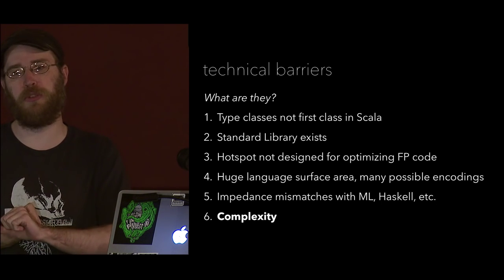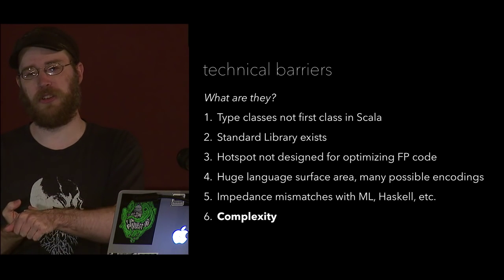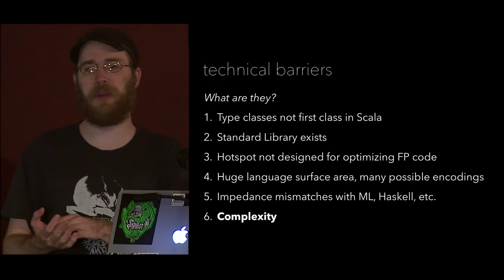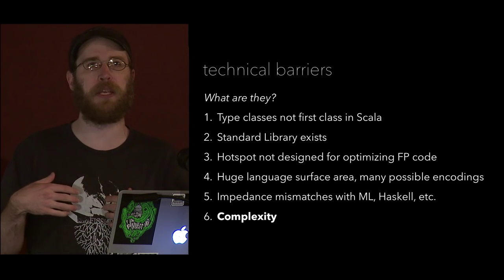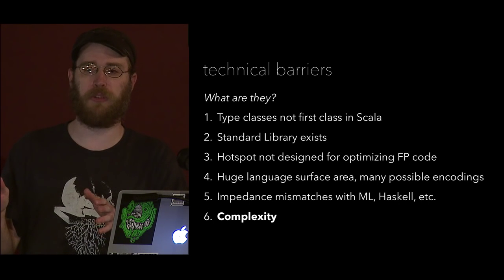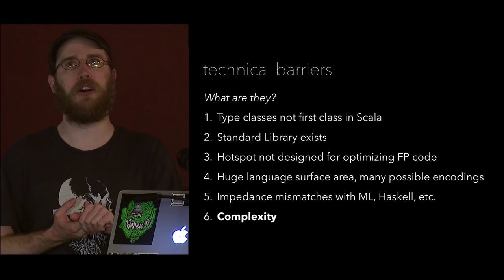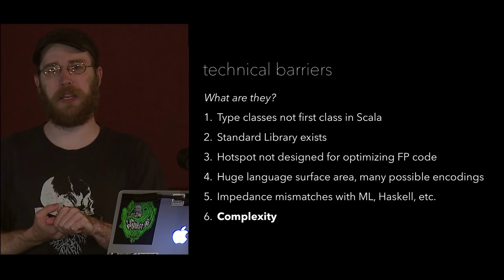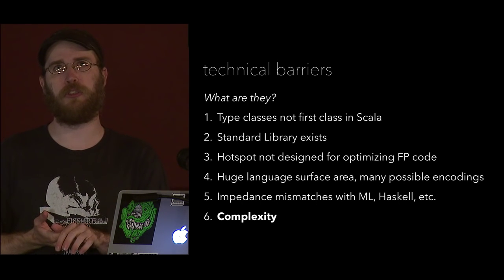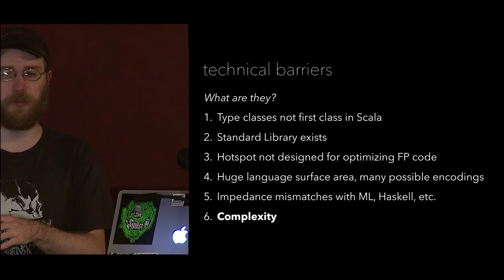Type classes are not first class — that's just a huge thing for people. They don't recognize them when they're there; they're not sure how to use or write them. Type classes have a lot of machinery: the type class itself, the instances, implicit syntax. In Spire we have people trying to extend Ring all the time — that's my fault for not making it clear. The standard library is very large and sprawling, and a lot of stuff is not designed 100% compatibly with functional principles — Option has a get, List has a head — these teach people the wrong lesson.